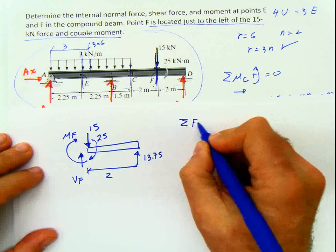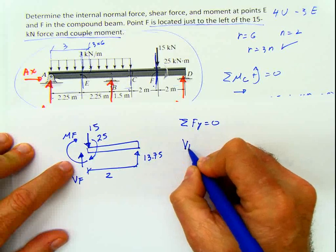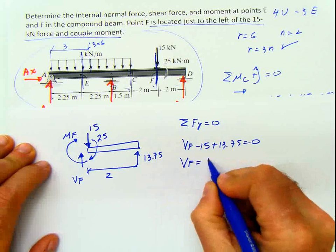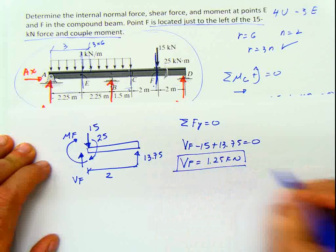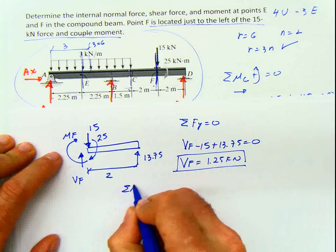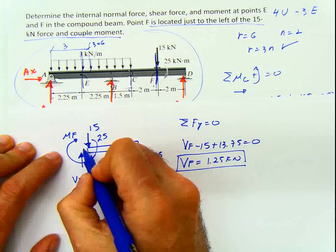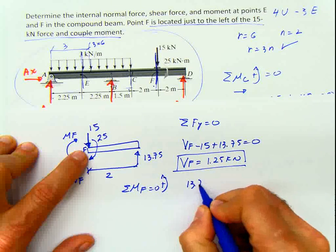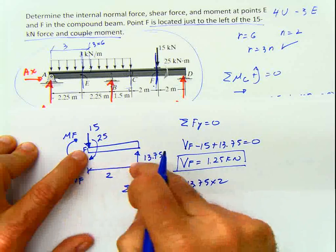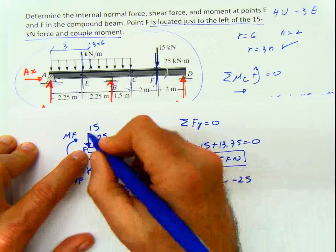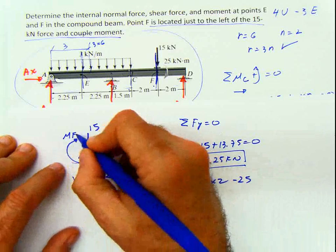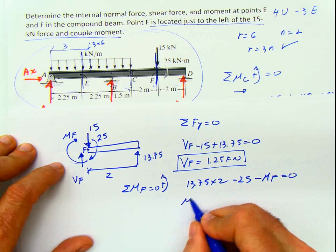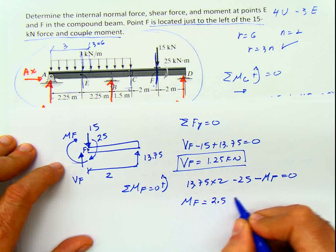Summation of forces in y equals 0: VF minus 15 plus 13.75 equals 0, so VF equals 1.25 kilonewtons. Doing summation of moments at F equals 0: 13.75 times 2 positive, minus 25, minus MF equals 0. The 15 kilonewton force produces no moment since it's at the same point. Solving gives MF equals 2.5 kilonewton meters.